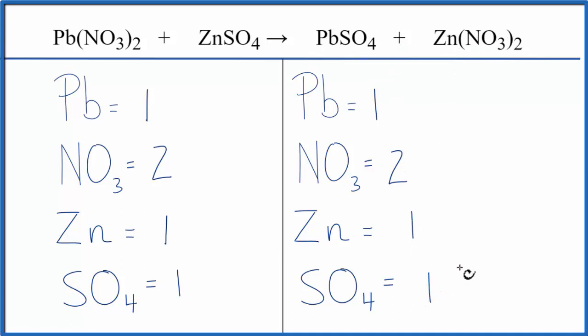You can look at these numbers here and see that they are the same. That means this equation is balanced. And by counting these polyatomic ions, because they appear on both sides as just one item, it makes the balancing much quicker.